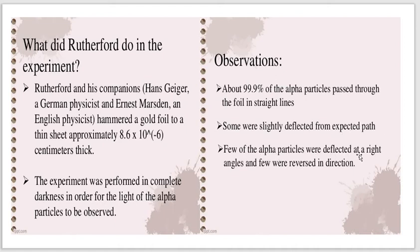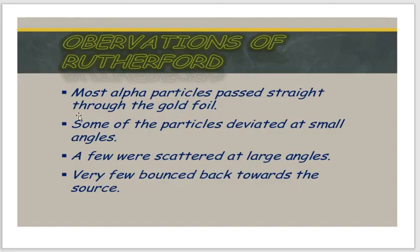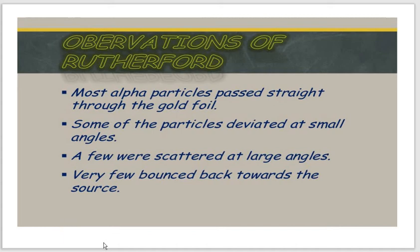A few of the alpha particles were deflected at right angles and a few were reversed in direction. Most of the alpha particles passed straight through the gold foil without undergoing any deviation. Some of the particles deviated at small angles. A few particles were scattered at large angles, and a few alpha particles were scattered through 180 degrees — that is, they were scattered in the backward direction.